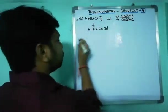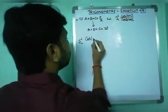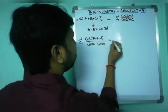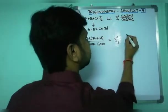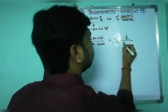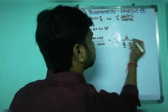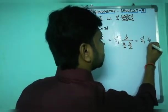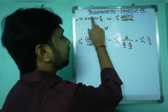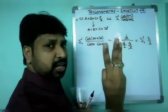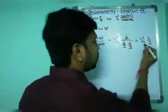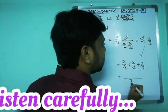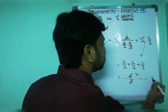Substituting: cos(b+c) = cos(30+30) = cos 60 = 1/2, and cos 30 · cos 30 = (√3/2) · (√3/2) = 3/4. So each term gives (1/2)/(3/4) = 2/3. Sigma means summation over all three angles A, B, C, so this is repeated 3 times: 2/3 + 2/3 + 2/3 = 6/3 = 2. The answer is 2.